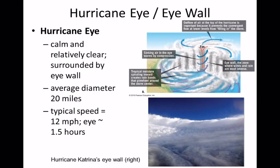Here is an actual photograph taken from inside the eye wall — reconnaissance airplanes fly into and over the eye to assess the situation. This photograph was taken inside Hurricane Katrina, looking outward at the eye wall. That's kind of creepy.